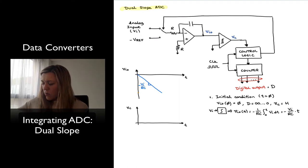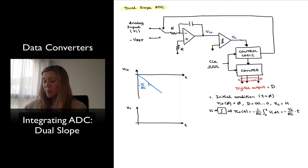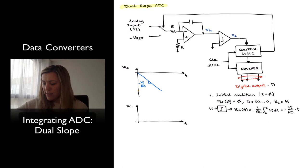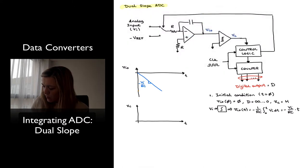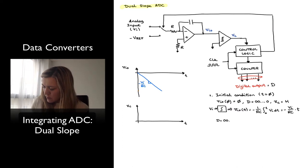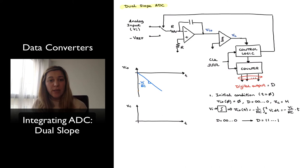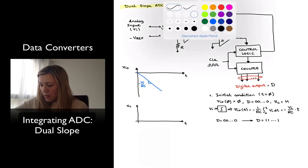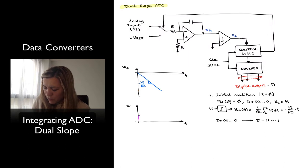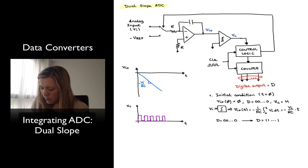I allow the integrator to integrate the input signal for 2^n clock cycles — meaning I allow the counter to count from D equals all zeros all the way to D equals all ones. So the number of clocks is enough to take the counter from its initial state to its final state, which is 2^n clock cycles.